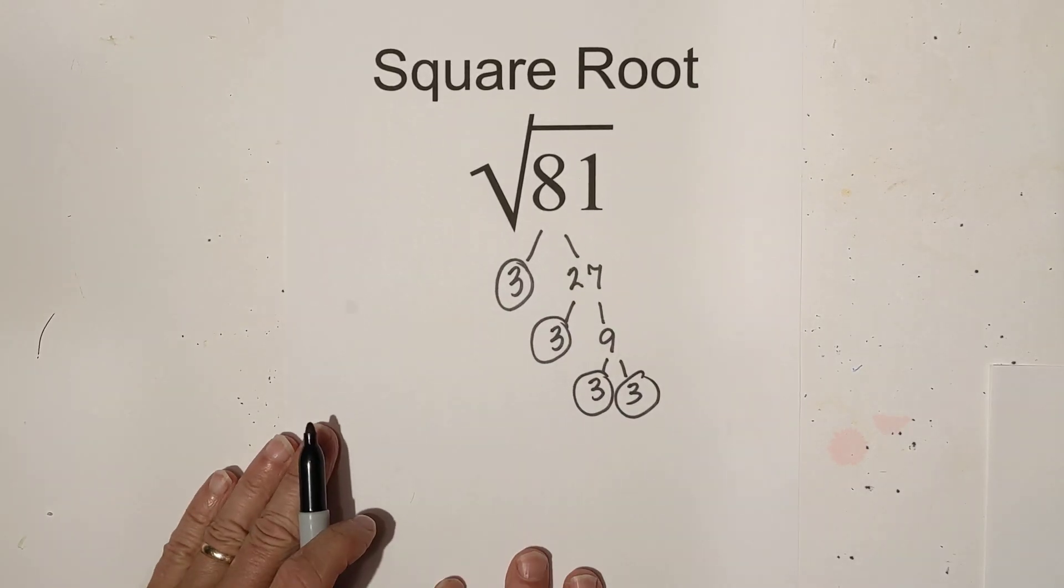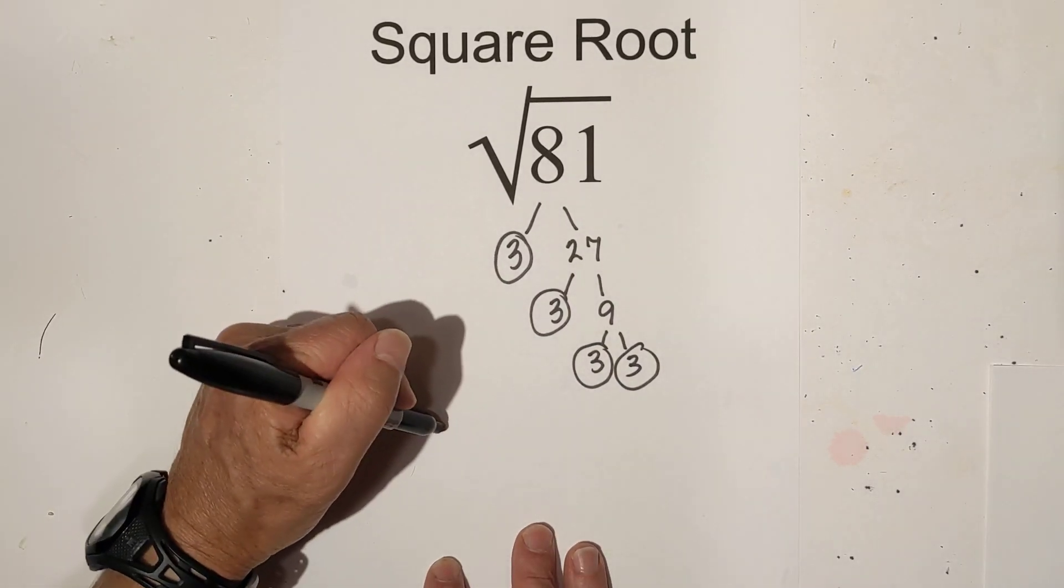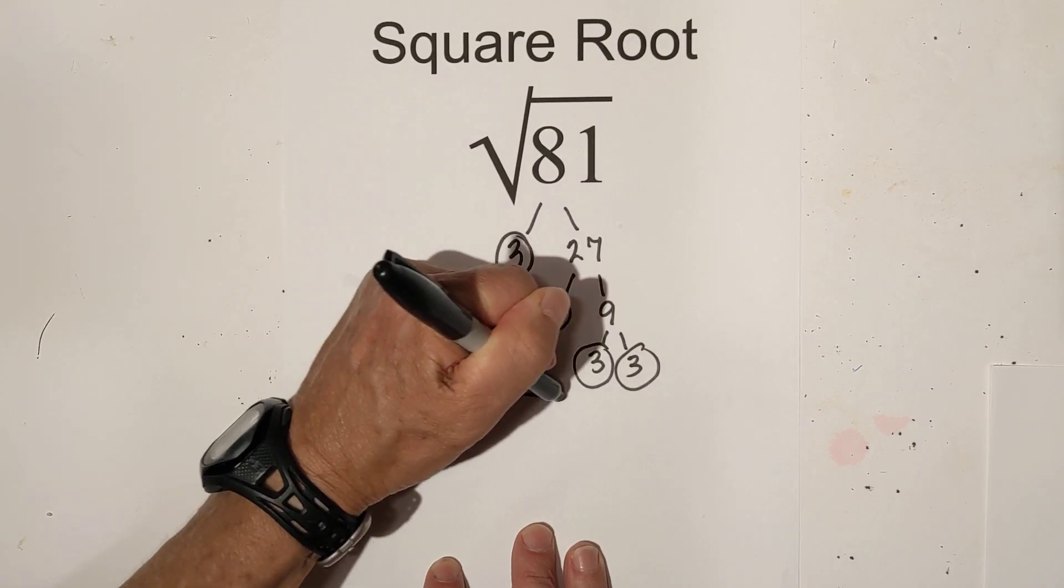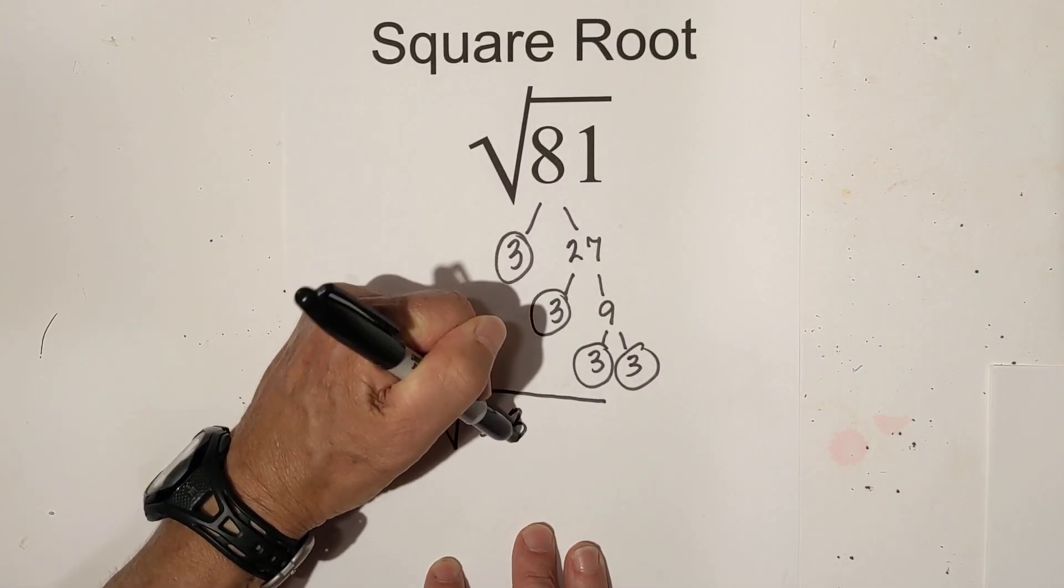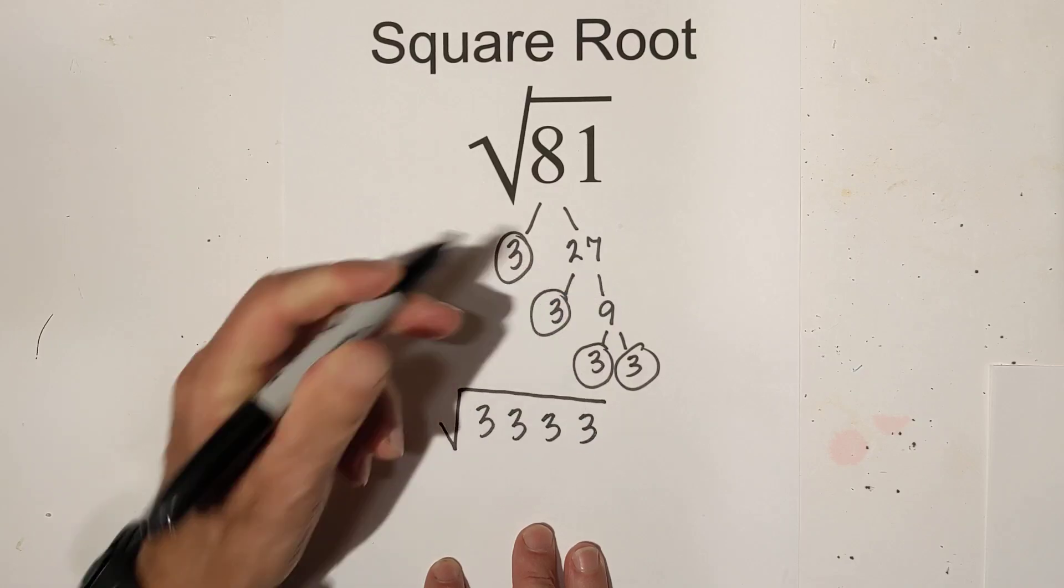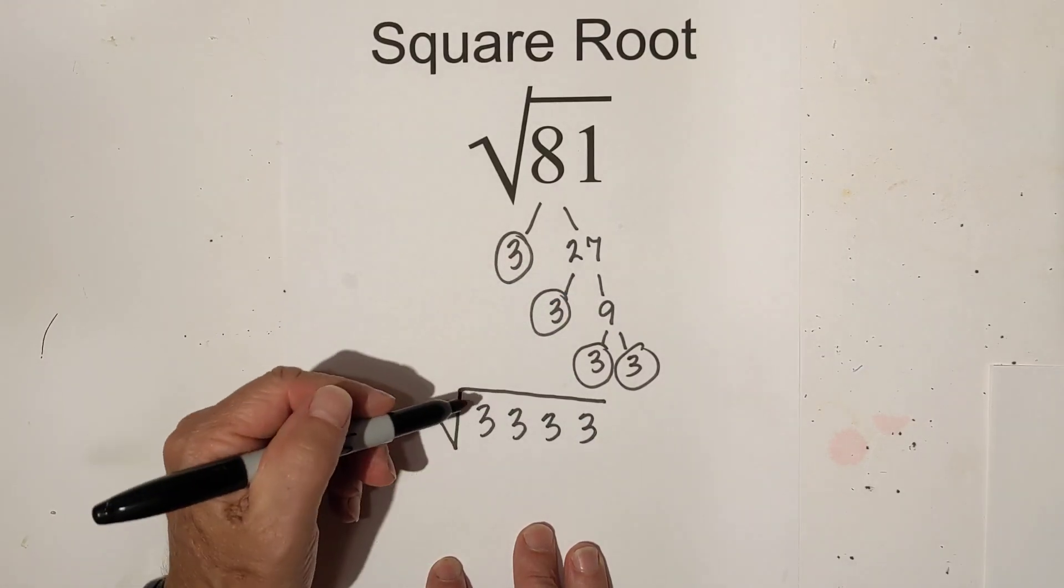Now if we place these prime numbers under a radical sign, we have four 3's. The rule is, since it's a square root, if you have pairs you can pull them out.